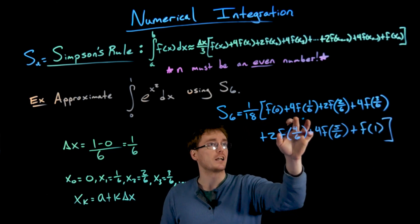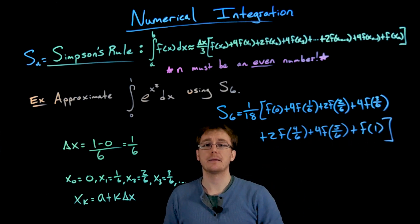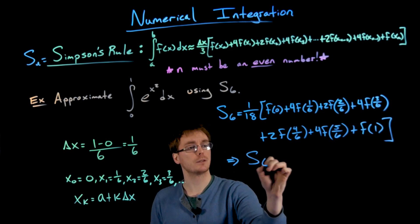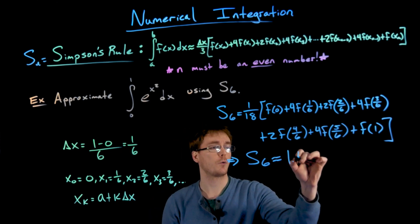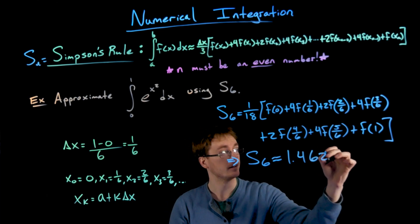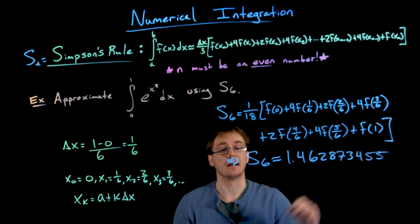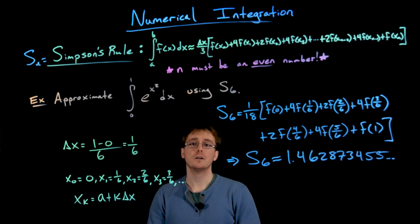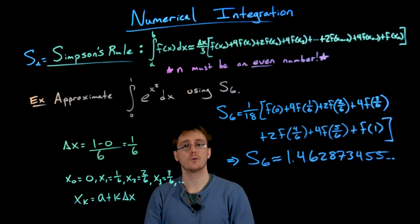Once we add all those terms together and multiply by one-eighteenth, our Simpson's rule approximation with n equals 6 is approximately 1.4628735. With this approximation, we know approximately how much area is between this curve and the x-axis on the interval from zero to one.